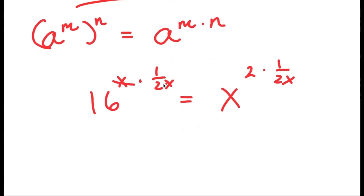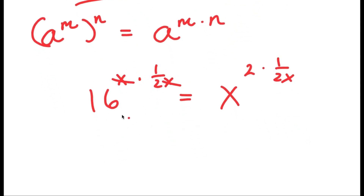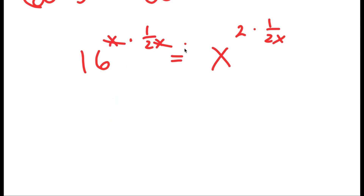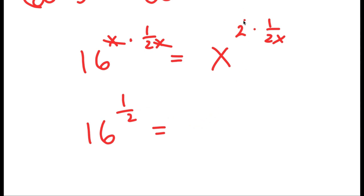Now the x and x cancel out on my left hand side because they multiply out, so I'm left with 16 to the power of 1 half on my left hand side. And for my right hand side, the 2's cancel out, so I'm left with x to the power of 1 over x.